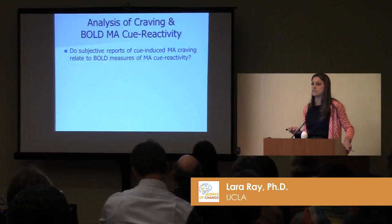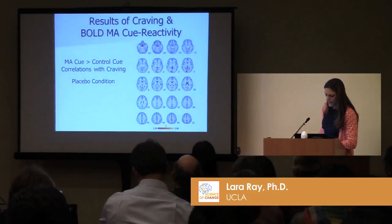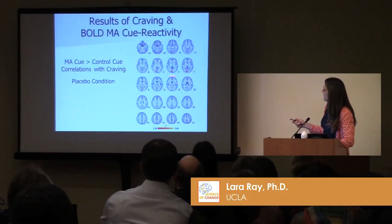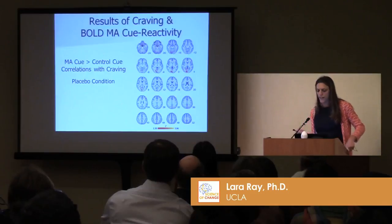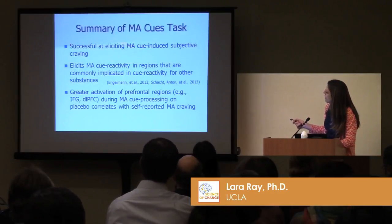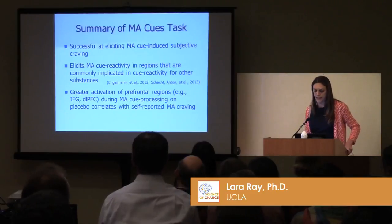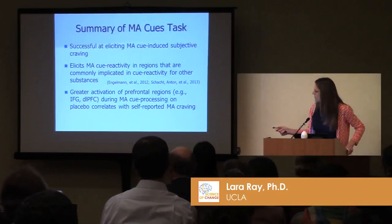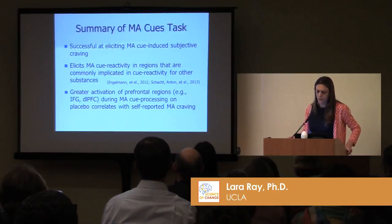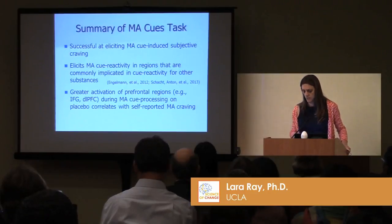How does brain activation relate to self-reported craving? We entered self-reported craving into our models, and looking only at the placebo condition, we found a positive correlation indicating greater self-reported craving is associated with higher activation of the IFG and dorsolateral PFC. In summary, we have a successful task eliciting cue-induced craving. The task elicits cue reactivity in regions commonly implicated in cue exposure paradigms, and there is greater activation of prefrontal regions — particularly IFG and LPFC — during meth cue processing on placebo as it correlates with meth craving. That relationship was not found in the naltrexone condition.